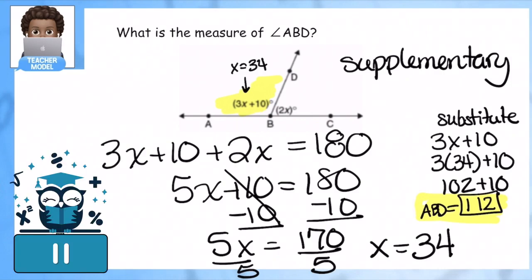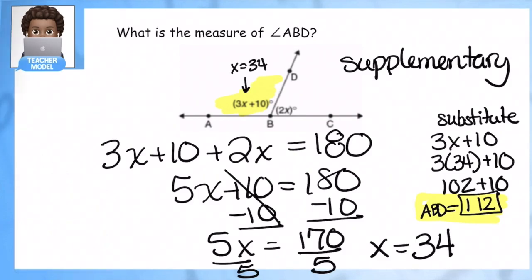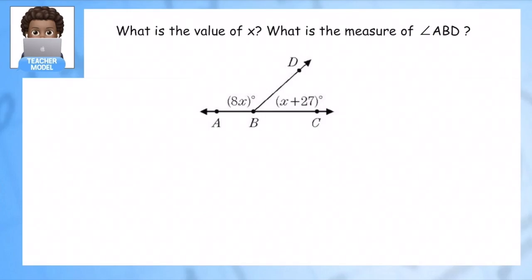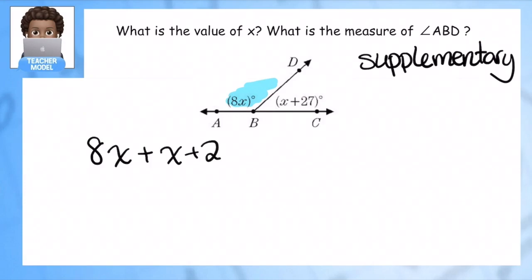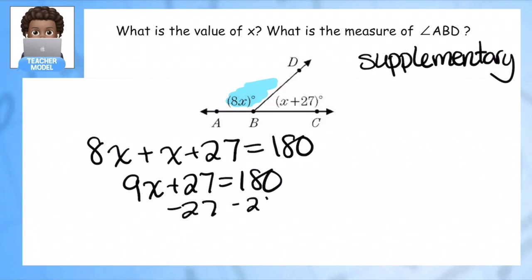Let's jump into our second problem. Again, we're looking for the measure of angle ABD, and in this example we're recognizing these are supplements, they're supplementary. So I'm going to write our equation: 8x plus x plus 27 equals 180. I'm going to combine my like terms and solve for x. Let me give myself a little bit more space.